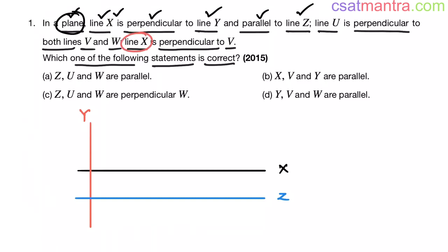Line x is perpendicular to line v. So line v should be perpendicular to line x. This is line v perpendicular to line x.